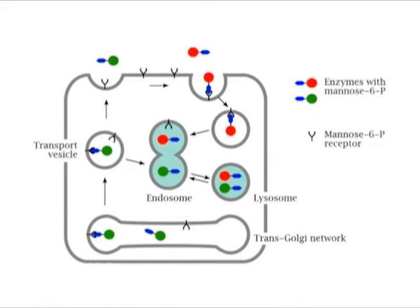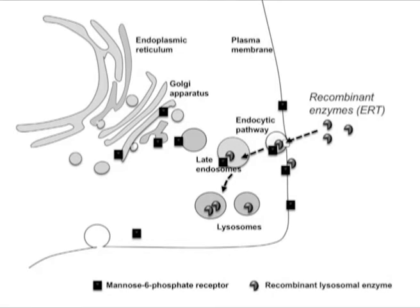This acidic environment causes dissociation of the lysosomal enzymes from the mannose-6-phosphate receptors. The enzymes are packaged into vesicles for further transport to stabilized lysosomes. The late endosome itself can eventually grow into a mature lysosome, as evidenced by the transport of endosomal membrane components back to the endosome.